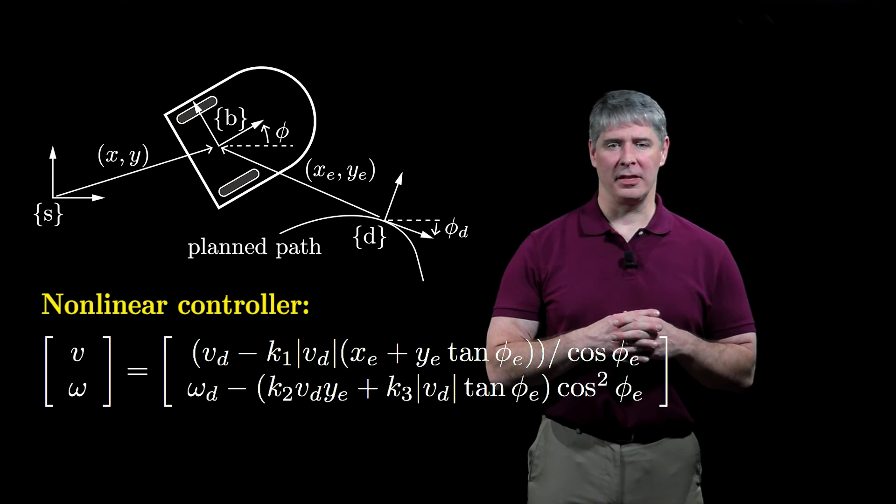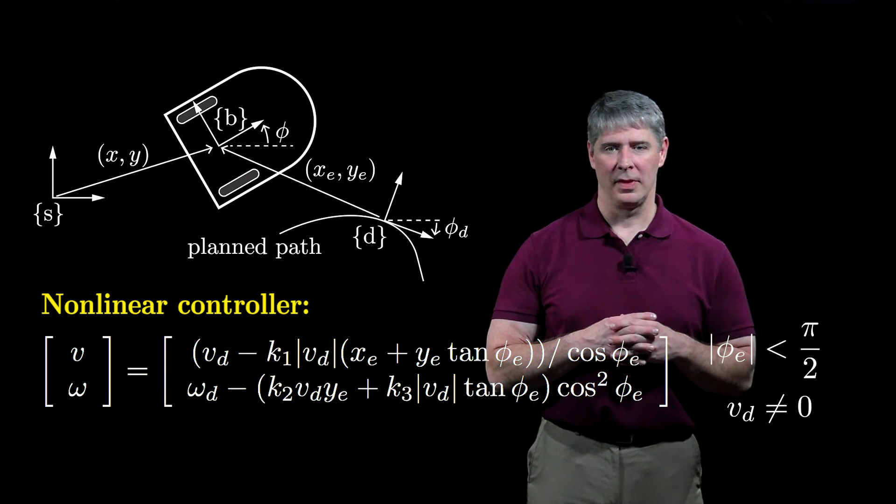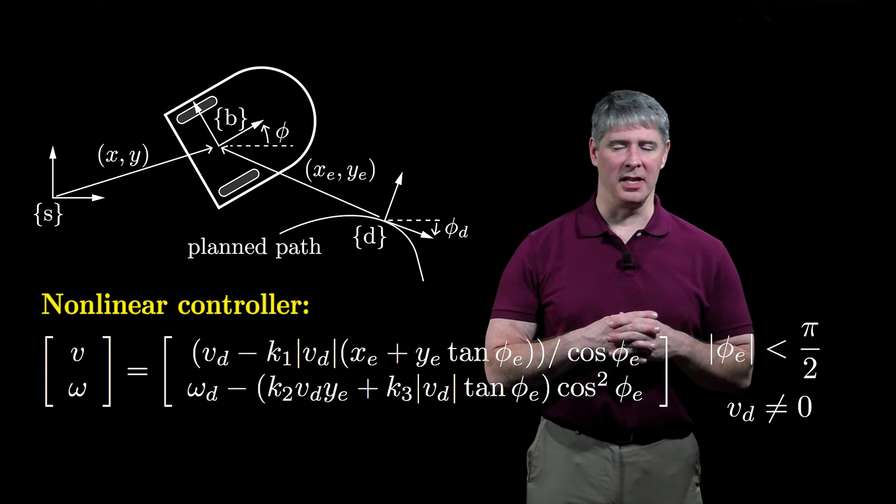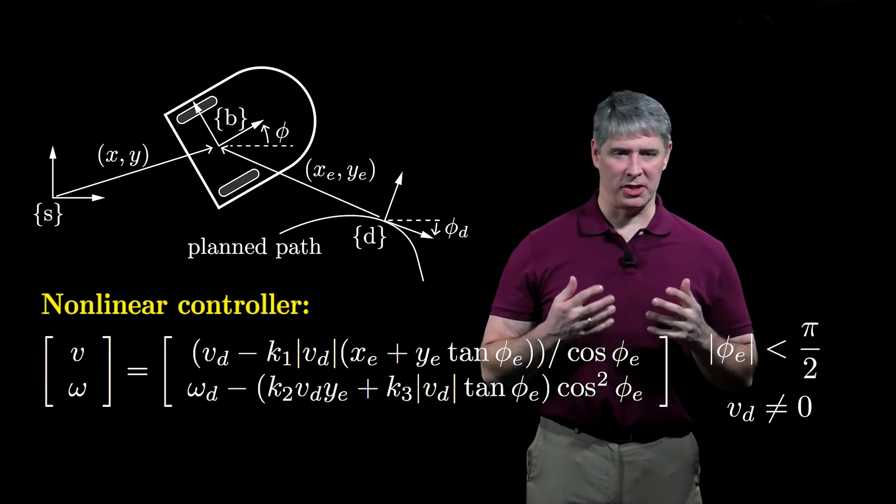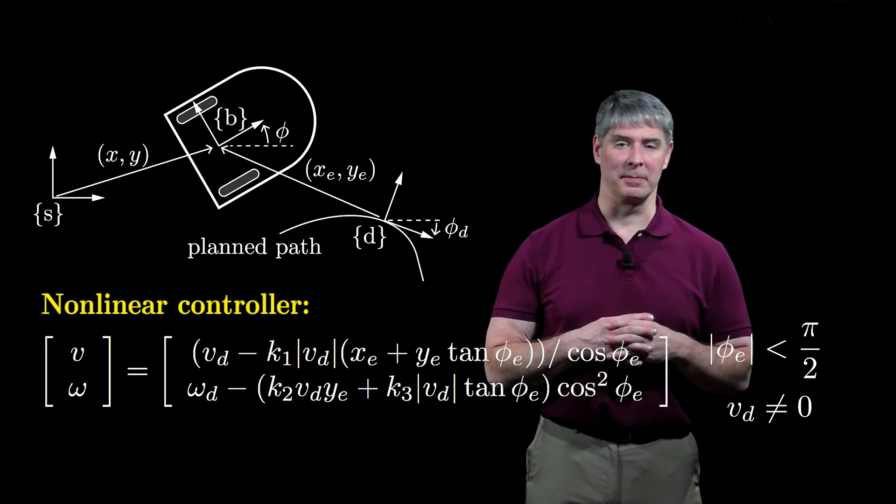Also, examining the control law shows that the heading error should be less than pi over two, and the linear velocity of the planned motion should be nonzero. In other words, this control law is not a good choice for stabilizing a trajectory that simply spins in place.